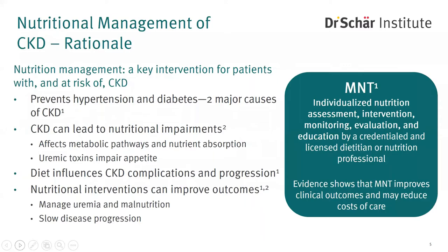There are a number of nutritional factors that strongly influence CKD incidence and progression, and therefore nutrition is really central to CKD management. Early intervention may positively influence disease evolution. When a person has CKD, nutrient absorption and a number of metabolic pathways are interrupted. Additionally, buildup of uremic toxins may impair appetite, leading to malnutrition. Studies show that nutritional interventions mitigate risk for uremia, malnutrition, and progression to dialysis. An individualized dietary counseling and follow-up, which we call medical nutrition therapy, should be a routine part of the care for people with CKD.